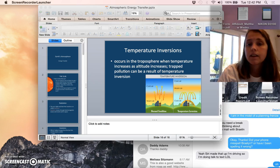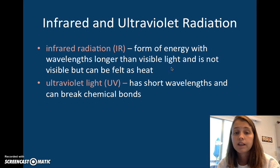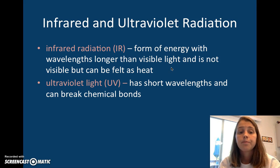Infrared and ultraviolet. Infrared radiation is a form of energy with wavelengths that are longer than visible light and is not visible but can be felt as heat. Ultraviolet radiation has short wavelengths and can break chemical bonds. We can't see this either, but this is the reason why we wear sunscreen. The UV light has short wavelengths and can go in and destroy your cells. That's why it causes cancer.